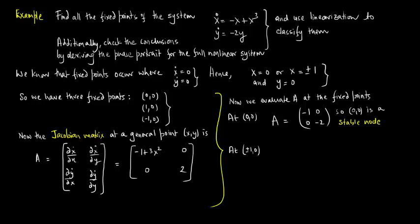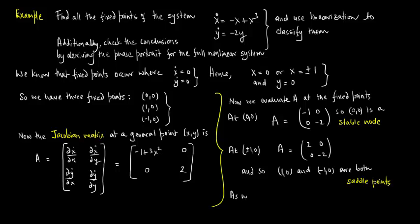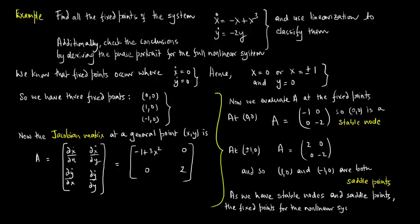At (±1, 0): A = [[2, 0], [0, −2]], so both (1, 0) and (−1, 0) are saddle points. Since we have stable nodes and saddle points, the fixed points for the nonlinear system are in fact predicted correctly by linearization.